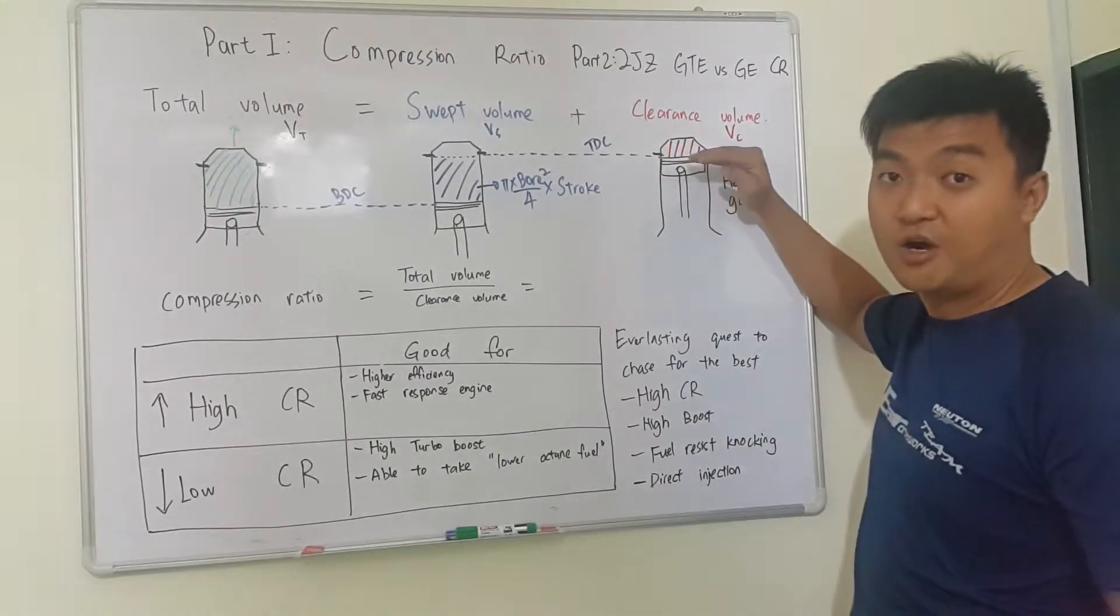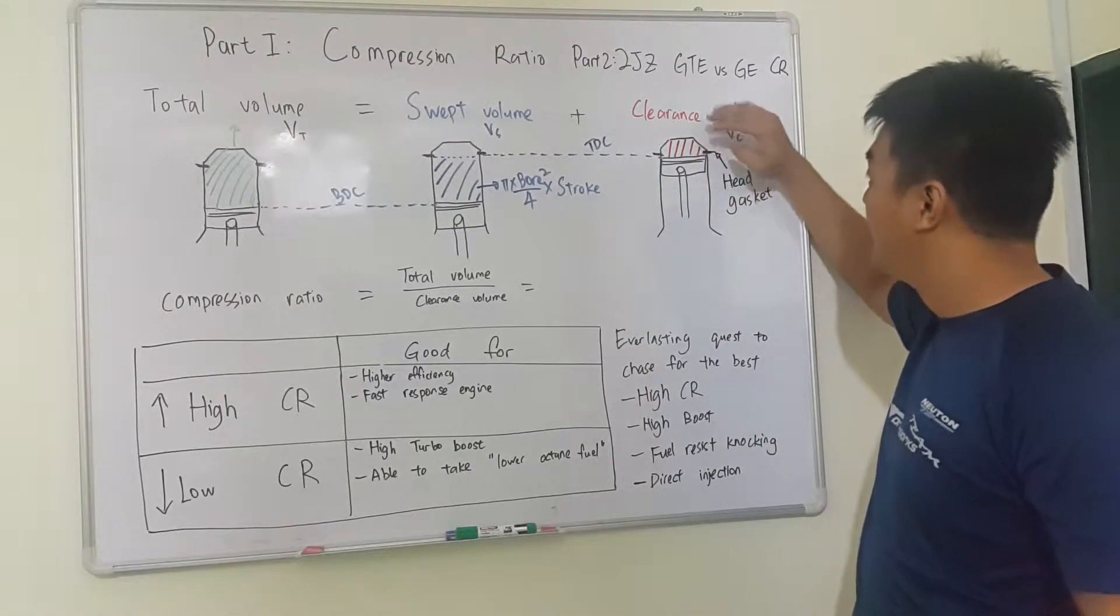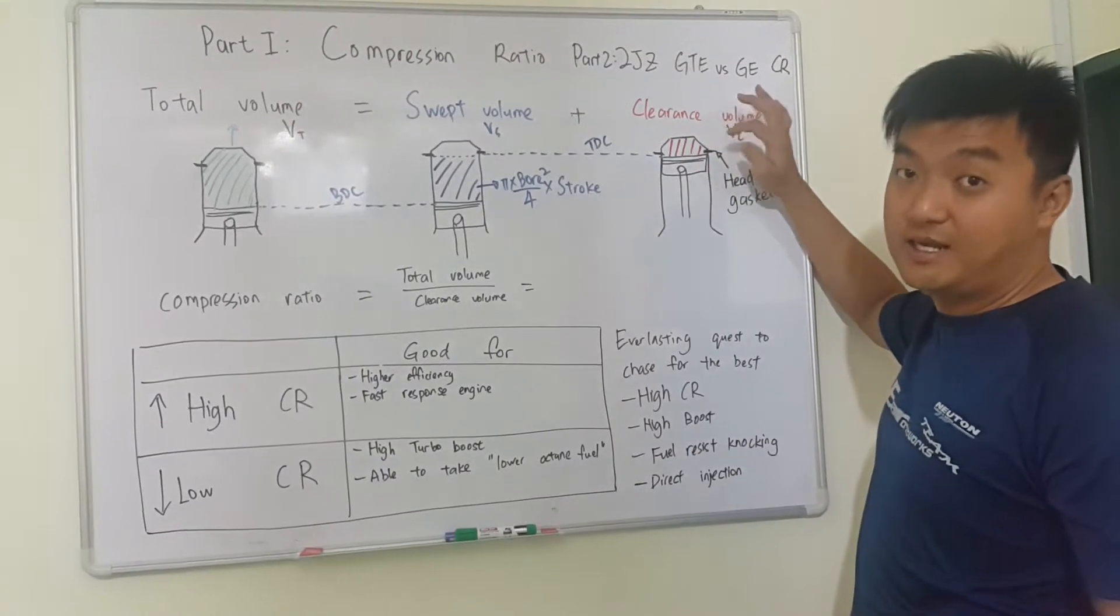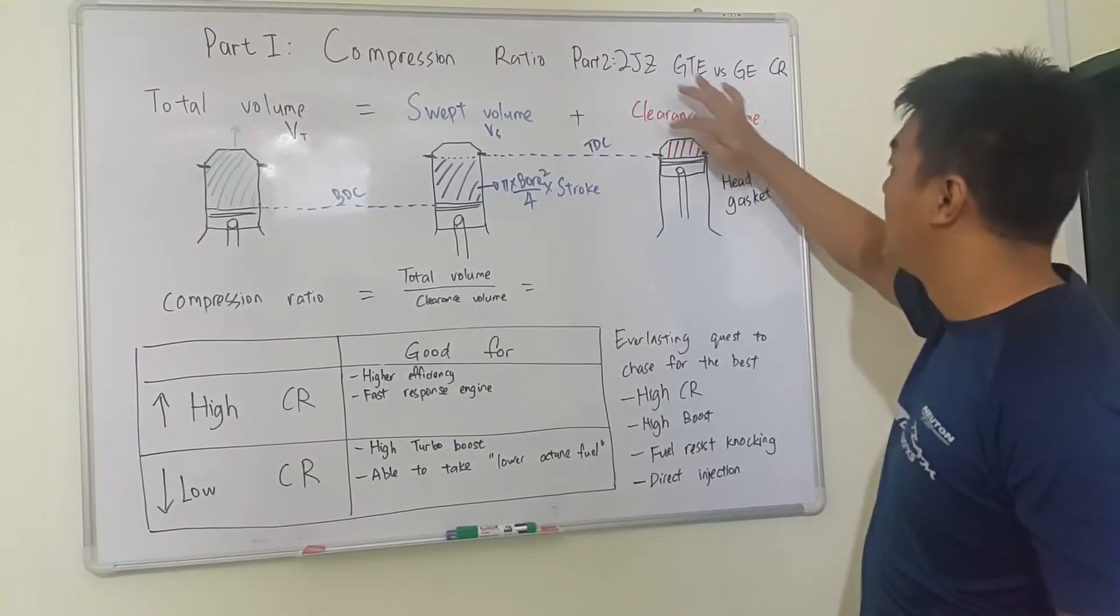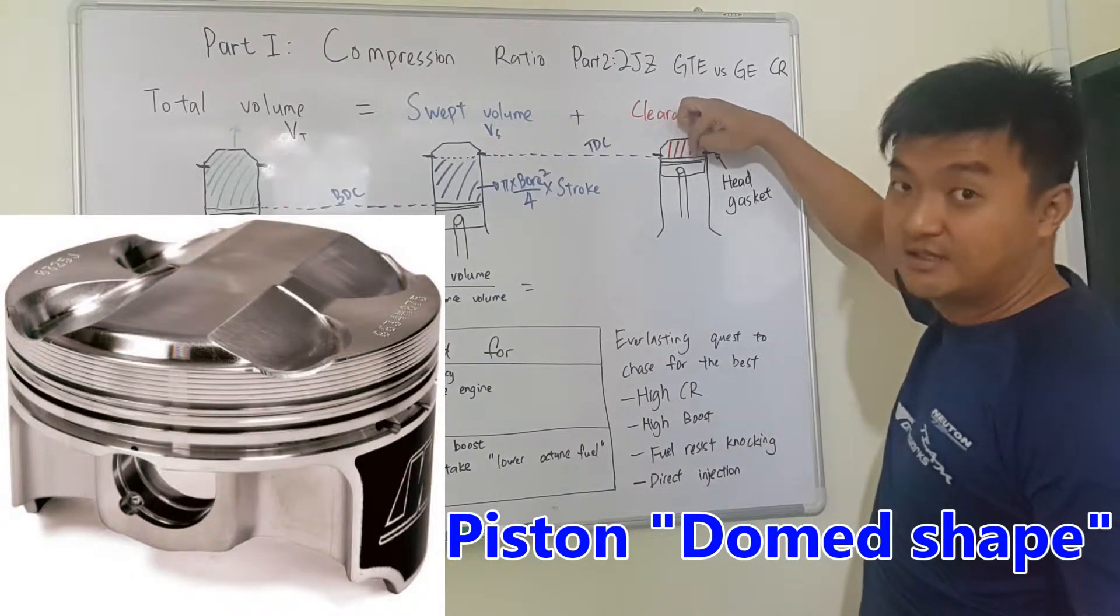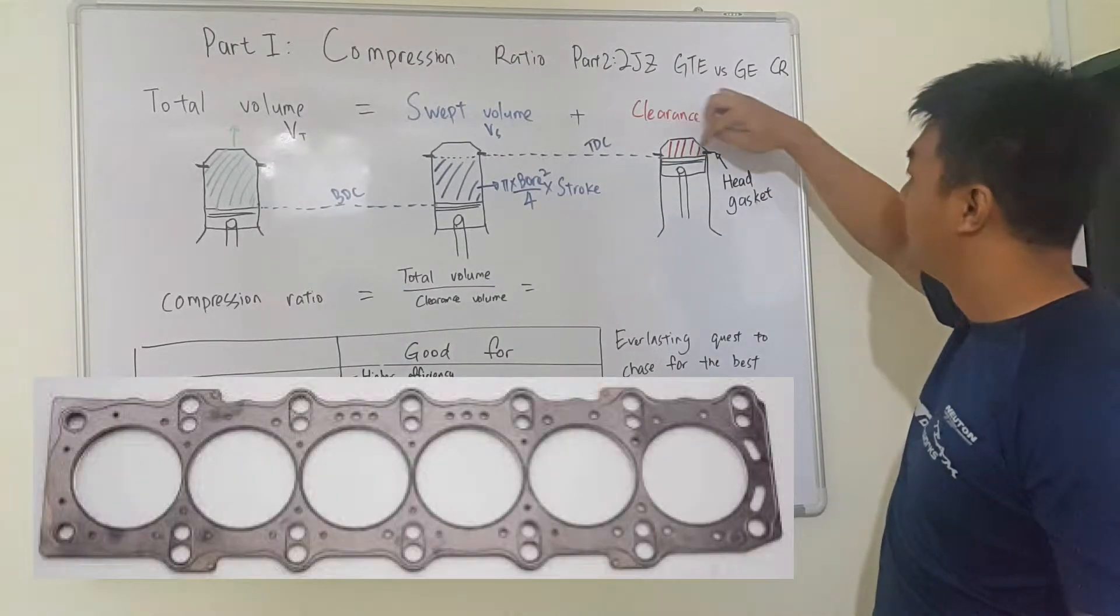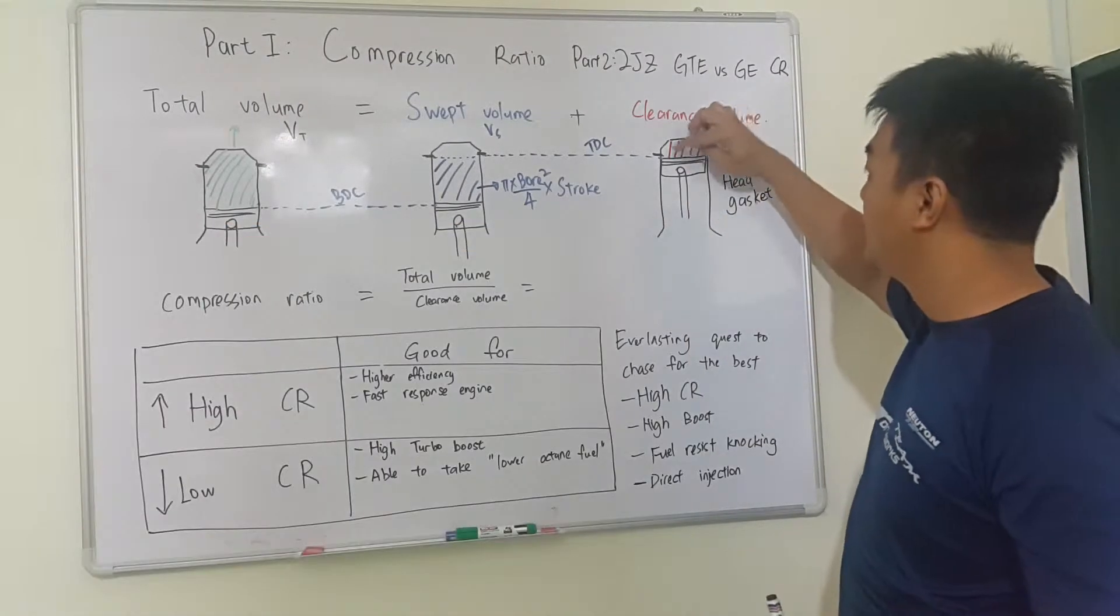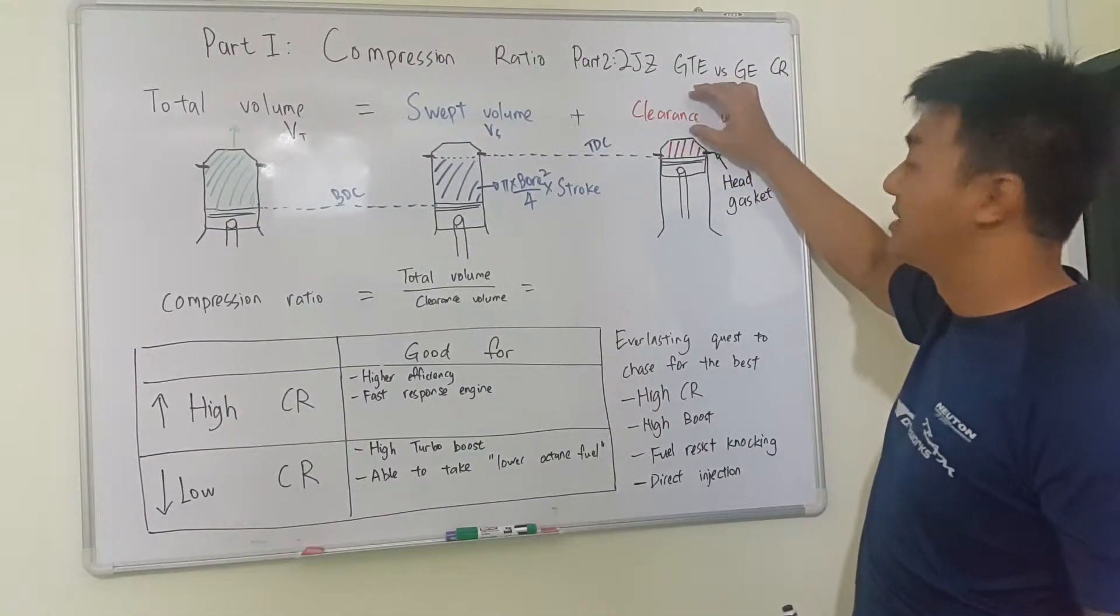And then when the piston travels to the top, to the top dead center, this volume we call it the clearance volume. It is caused by the piston recess, the head gasket, and then the top part of the cylinder head. All this add together become the clearance volume.